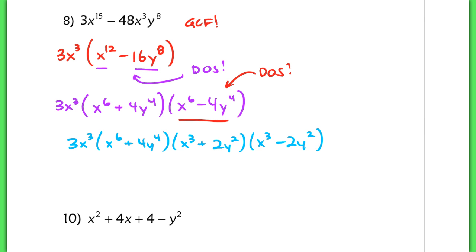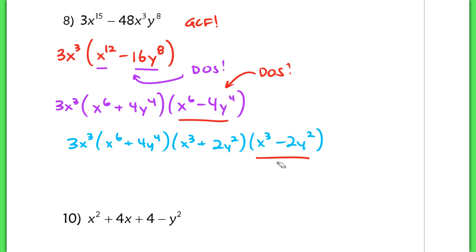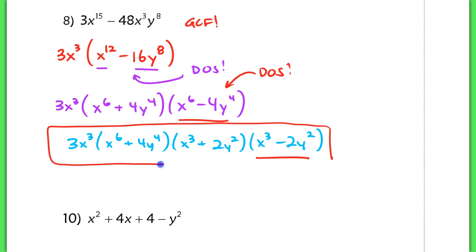That final factor is not a difference of squares because this is not a perfect square, and neither actually is the term with the 2. So this would be my final answer for factoring the beginning expression.